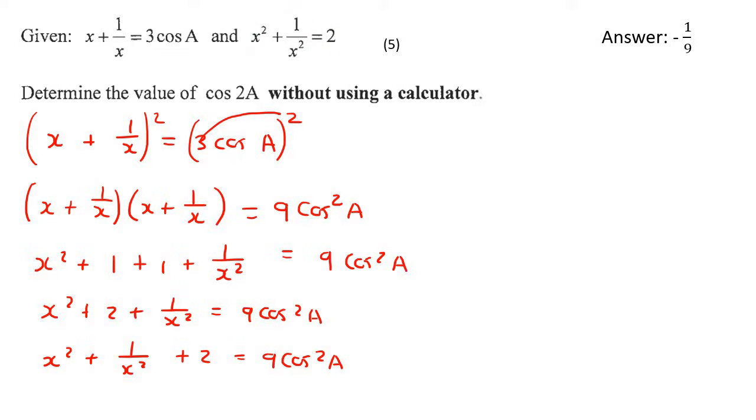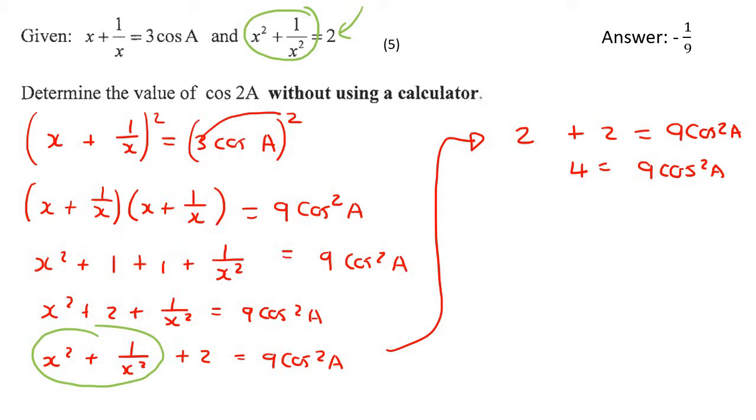Now, we know that this part, which is the same as this part, is equal to 2. They've told us that. So then, we can go 2 plus 2 is equal to 9 cos squared a. And that's going to be 4 equals to 9 cos squared a. And so then, if you had to divide, you would say 4 over 9 is equal to cos squared a. And so, cos a is then going to be plus and minus the square root of 4 over 9. Remember, whenever you take a square root, it's plus and minus. And if you do that, you're going to get plus and minus 2 over 3.